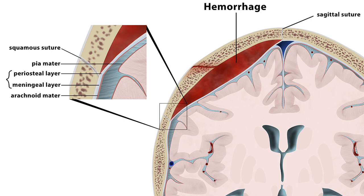The first type is an extradural hematoma, or epidural hematoma. This is the only type associated with a fracture of the skull. The concave appearance occurs because between the sagittal suture and the squamous suture there are ligaments attaching the periosteal layer, which sits above the meningeal layer, creating an anchoring point for the brain and tissue.